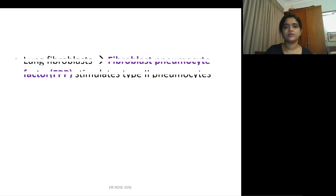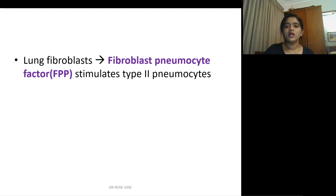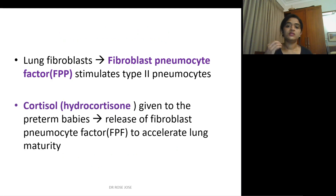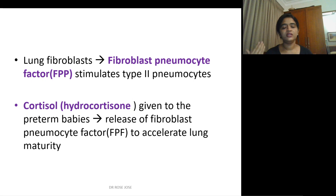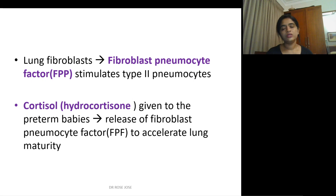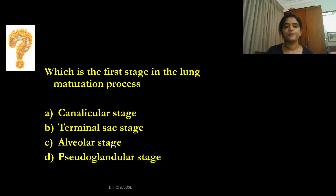The lung fibroblast secretes fibroblast pneumocyte factor (FPF), which stimulates the type 2 pneumocytes. The role of cortisol or hydrocortisone is that if given to preterm babies, it releases fibroblast pneumocyte factor, which accelerates lung maturity. This is the rationale behind giving steroid injections before birth in cases of preterm delivery.